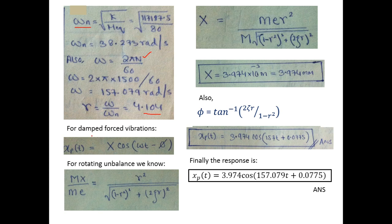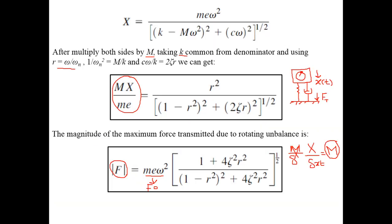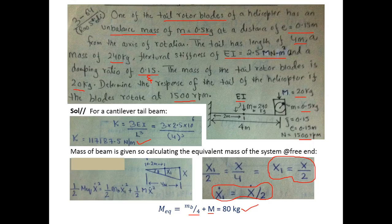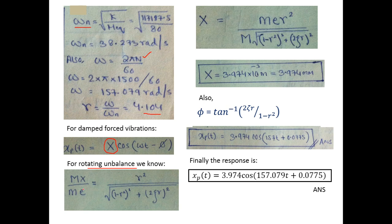For damped forced vibration — which rotating unbalance is a case of — the response is X·cos(ωt − φ). For rotating unbalance, we calculate the amplitude X from the rotating unbalance formula. With all values known, solving for X gives X = 3.974 × 10⁻³ m, which is approximately 3.974 mm. So the tail will vibrate at an amplitude of approximately 3.974 mm due to the unbalance in the tail rotor blades.